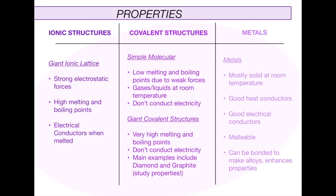Metals are mostly solid at room temperature, good heat conductors, and good electrical conductors because of those delocalized electrons. They are malleable, meaning they're able to flex and bend, and that's purely because of the regular atomic structure within them. They can also be bonded to make alloys, which enhances properties such as hardness and others.